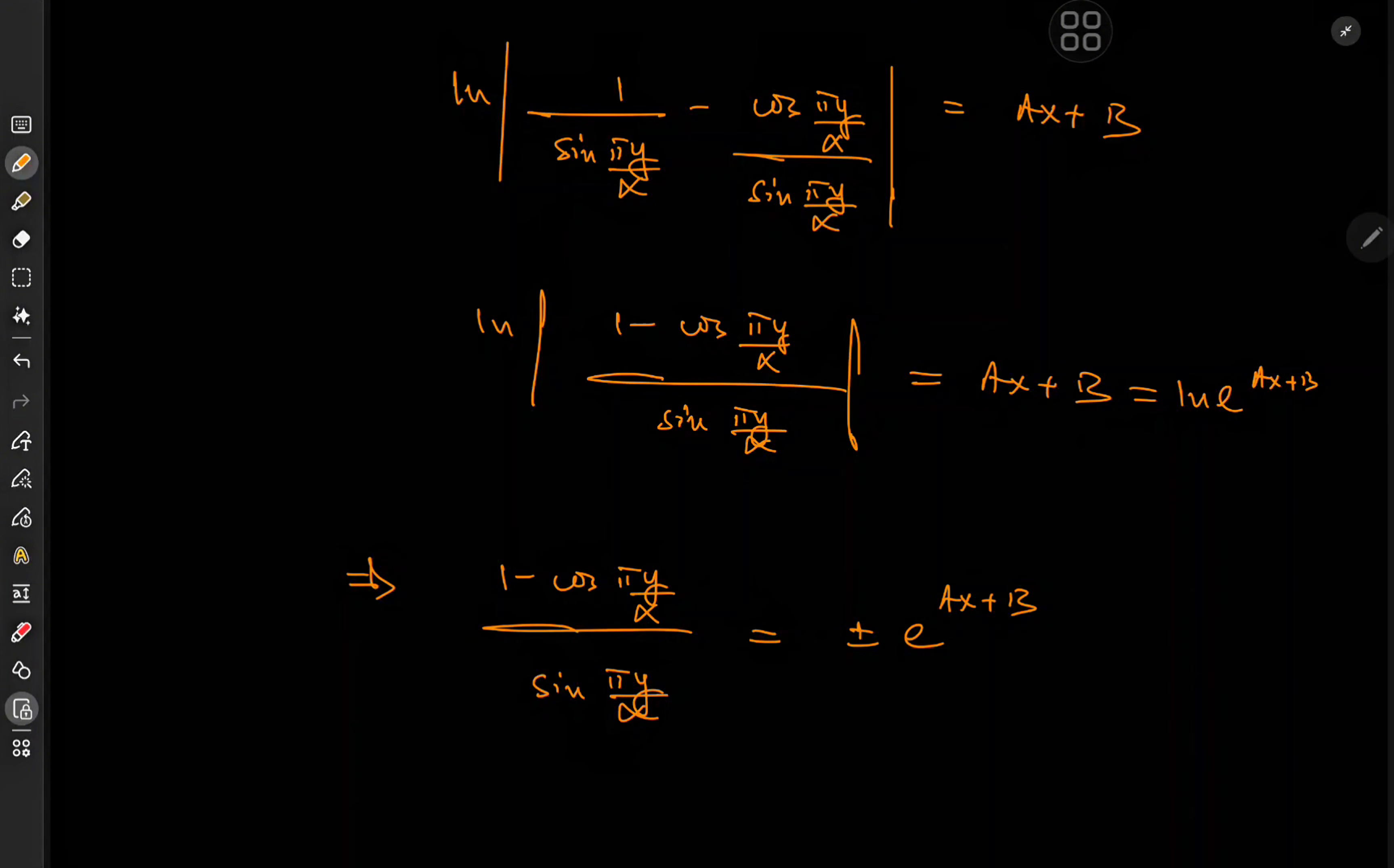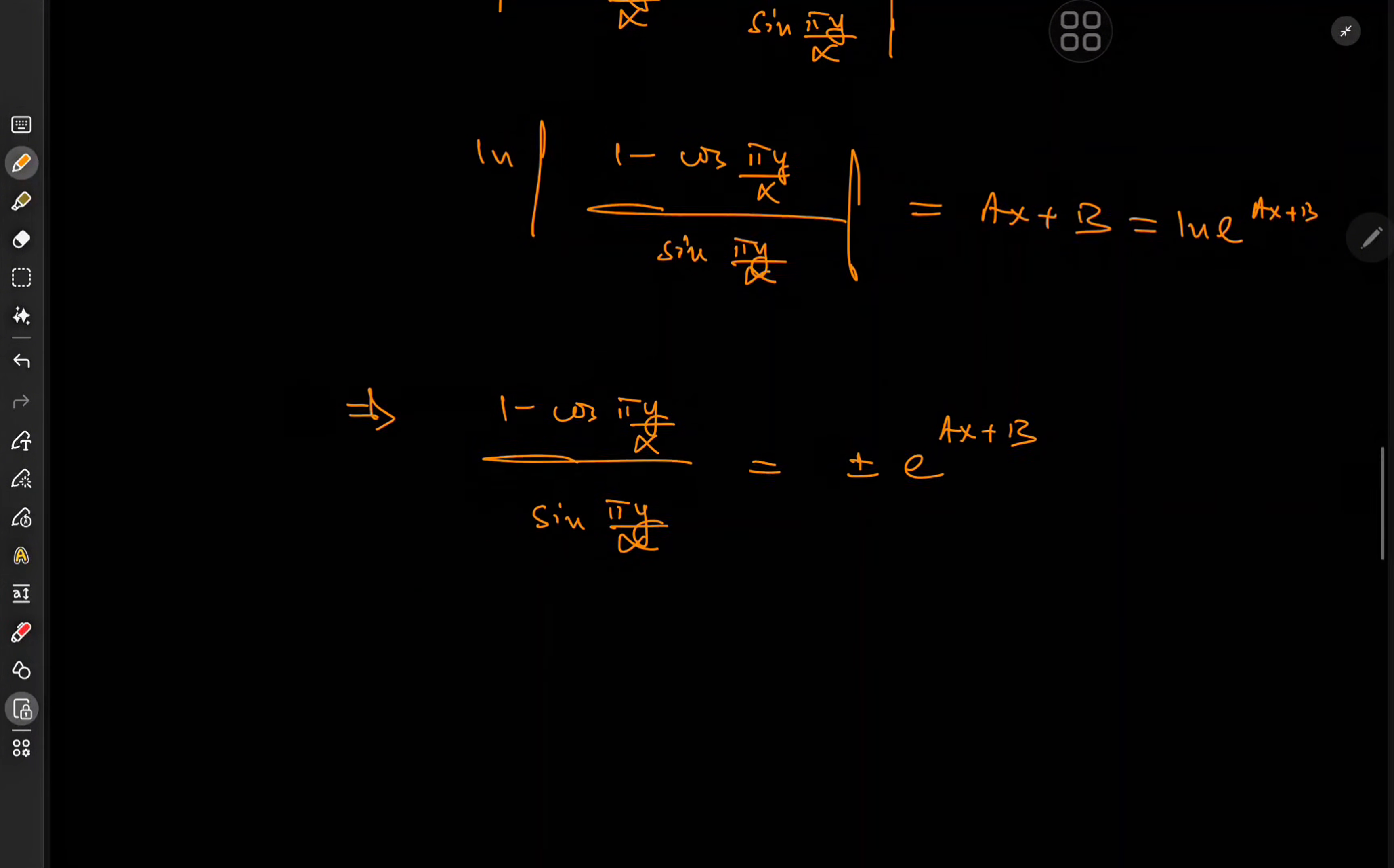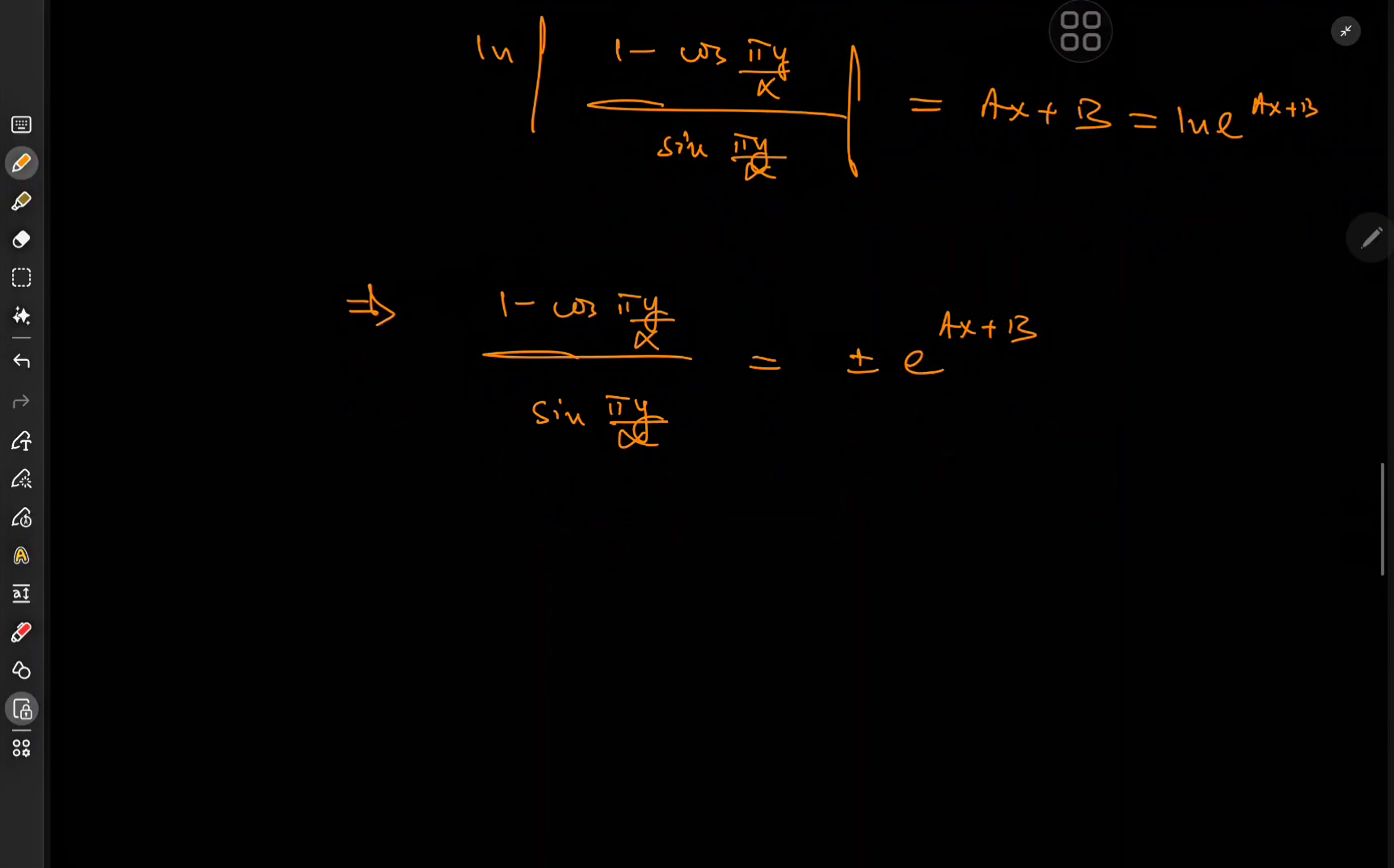So what we can do now is recall that the right-hand side could be expanded as the log of e to the ax plus b. So this implies that 1 minus cosine of pi y over alpha over the sine of pi y over alpha should be equal to plus or minus e to the ax plus b. There, you happy now? I'm carrying forward a plus or minus sign.